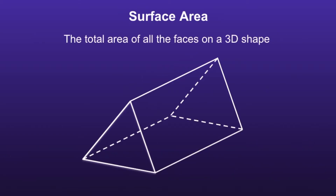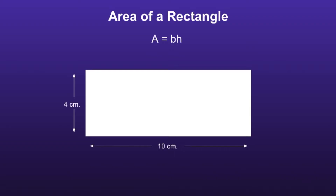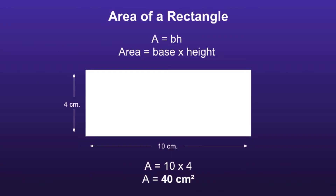Surface Area is the total area of all the faces on a 3D shape. In order to find the surface area of triangular prisms, we're going to have to first know how to find the area of a rectangle. The formula for area of a rectangle is A equals BH, which means area equals base times height. If we look at the picture, we can see that the base is 10 and the height is 4. And 10 times 4 is equal to 40, so the area of this rectangle would be 40 centimeters squared.